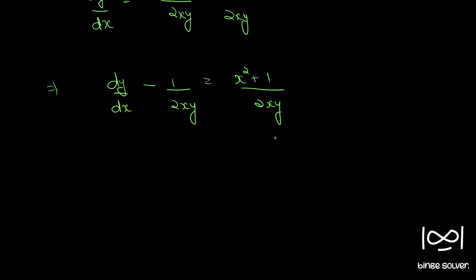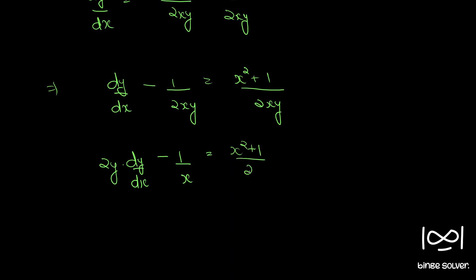Now we will eliminate the y term from the right-hand side. Multiply throughout by 2y: 2y times dy/dx minus 1/x equals (x squared plus 1) divided by 2x.